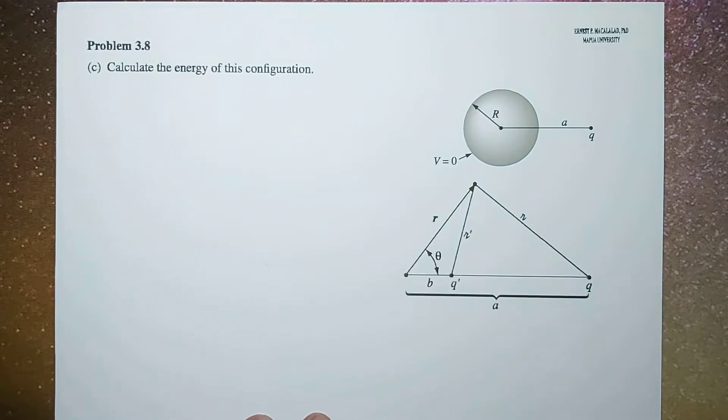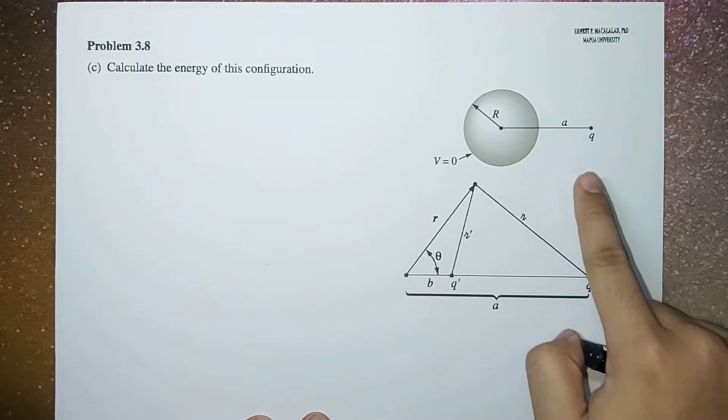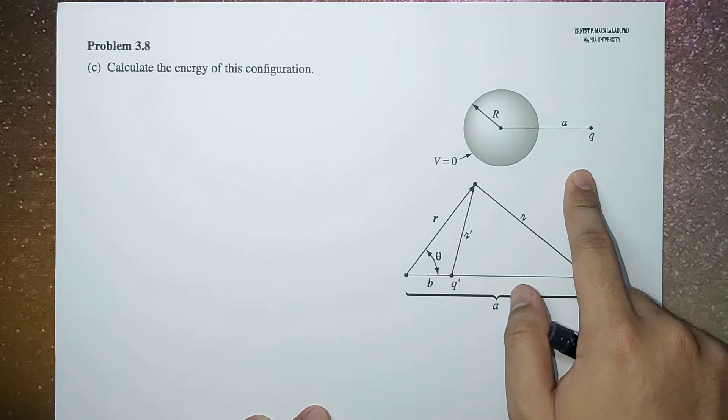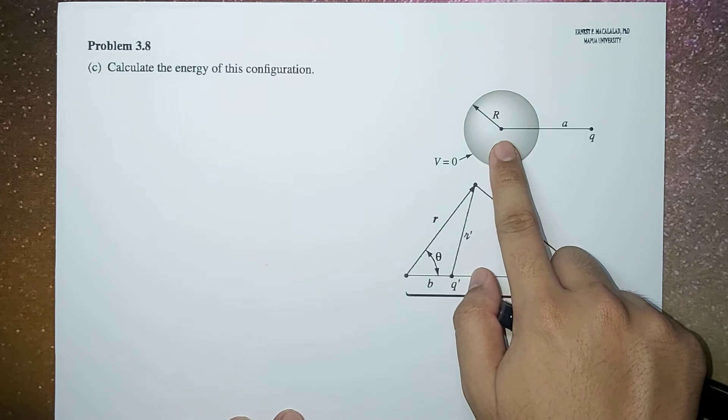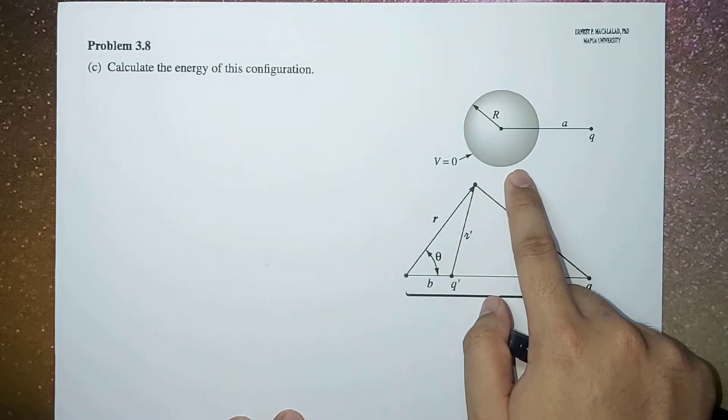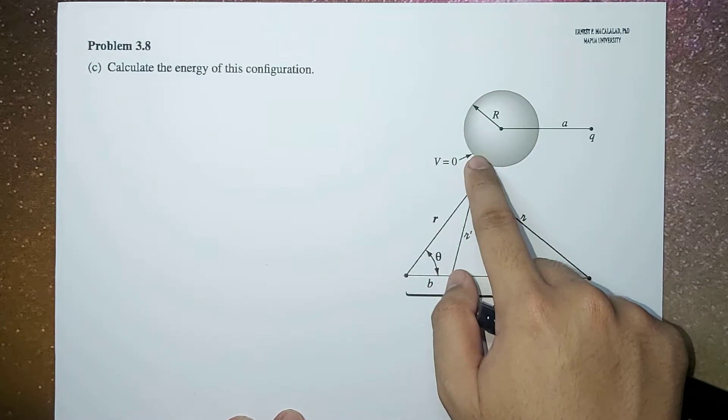So just a brief recap: here we have a charge q that is situated at a distance a from the center of a grounded sphere of radius r.